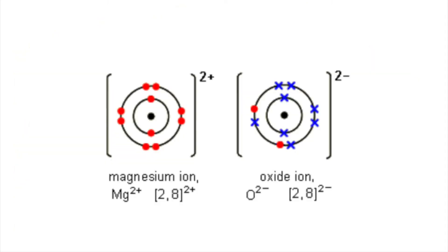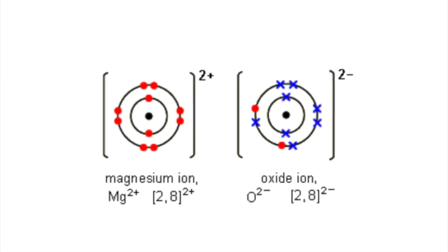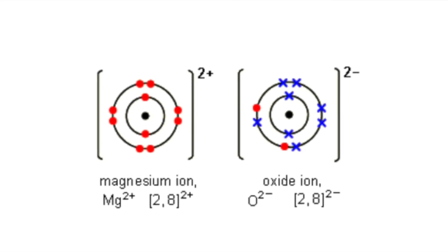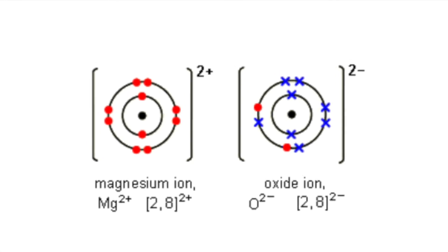Sometimes the atoms reacting need to gain or lose two electrons to gain a stable structure, and this can be seen with the example of magnesium and oxygen. Magnesium has an electronic structure of 2,8,2 and oxygen has an electronic structure of 2,6. When these two react they form magnesium oxide.